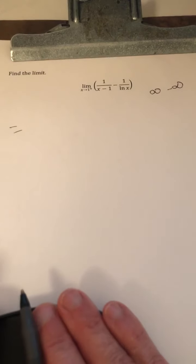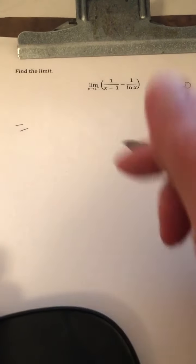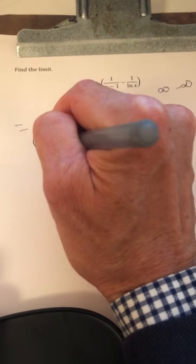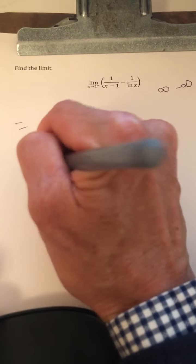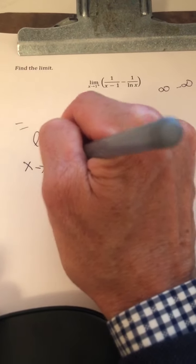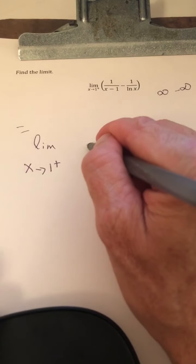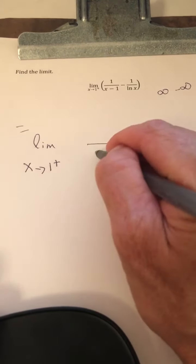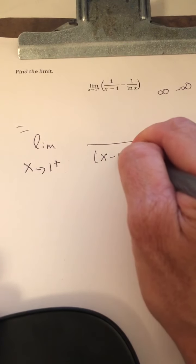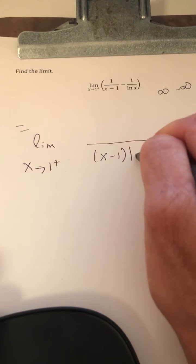So we'll get a common denominator. Again, as of right now, I'm not using L'Hopital's rule yet. I'm doing algebra. So the common denominator is x minus 1 times the natural log of x.